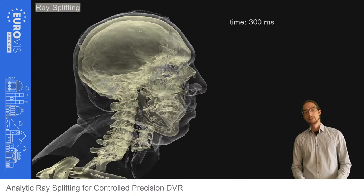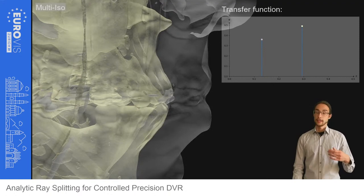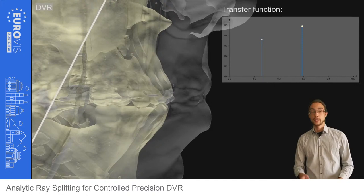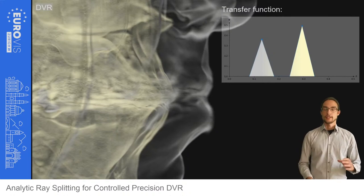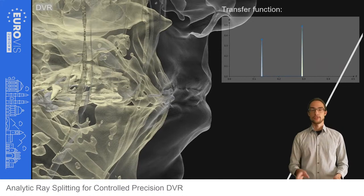But do we even need such transfer functions with narrow peaks? Let's zoom into the data set and switch to isosurfaces. Regular semi-transparent isosurfaces can separate the features very well, but cannot convey small uncertainties in the data set. We argue that direct volume rendering might be more faithful to the underlying data, as voxels with a density a little bit away from the isosurfaces still contribute to the output.